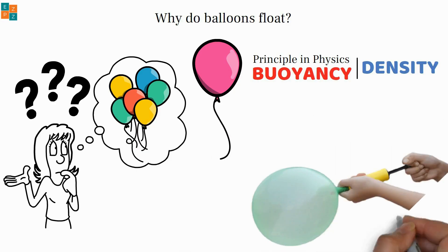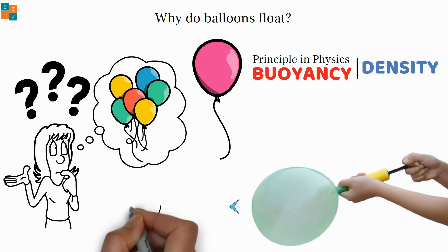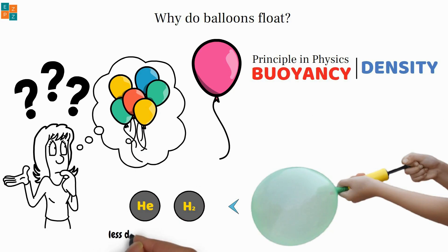When you inflate a balloon with a gas that is lighter than the surrounding air, such as helium or hydrogen, the balloon becomes less dense than the air around it.